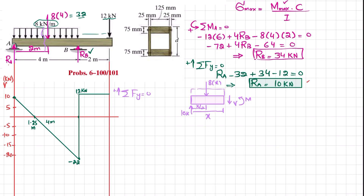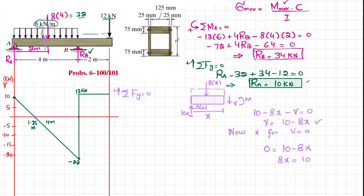Taking the free body diagram to the left of the cut, with R_A = 10 kN and a distributed load of 8 kN/m over length x, the equilibrium in the Y direction gives: 10 minus 8x minus V equals zero, so V equals 10 minus 8x. Setting V equal to zero: 0 equals 10 minus 8x, so x equals 10 divided by 8, which is 1.25 meters. The shear force is zero at x equals 1.25 meters.